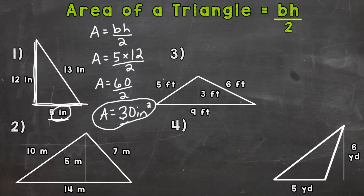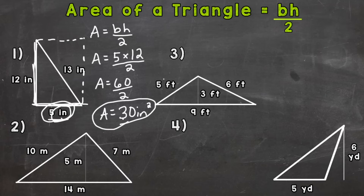Now let's go back to why we divide by 2. We have a triangle here. I'm going to draw some imaginary lines to make this a rectangle or parallelogram. In order to find the area of that parallelogram or rectangle we would do 5 times 12 — base times height or length times width — and that would get us 60. But this triangle is exactly half of that rectangle or parallelogram, so we divide by 2 to give us the area of the triangle.